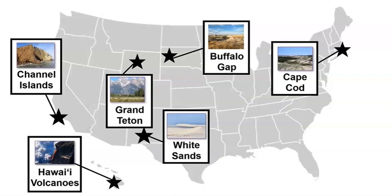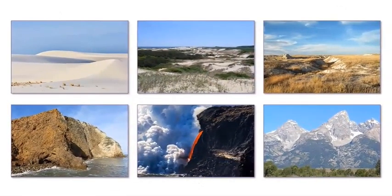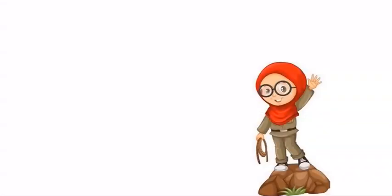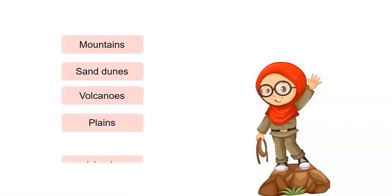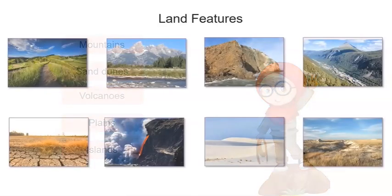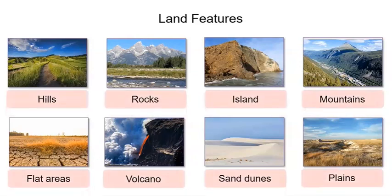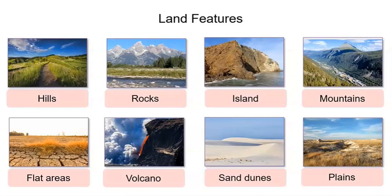Wow, look at all the different national parks we visited and all the different landforms we described. A landform is a natural feature on Earth's surface. There are many different landforms in the United States. We saw a lot of different landforms in this lesson: we saw mountains, sand dunes, volcanoes, plains, and islands. We can add the landforms we observed to our list of land features. This list will help us as we continue to explore and describe the shape of land.